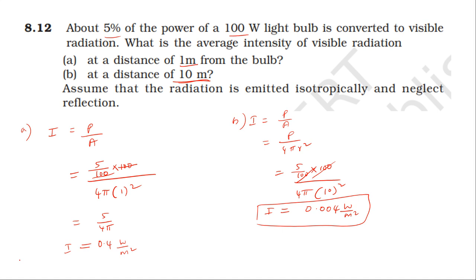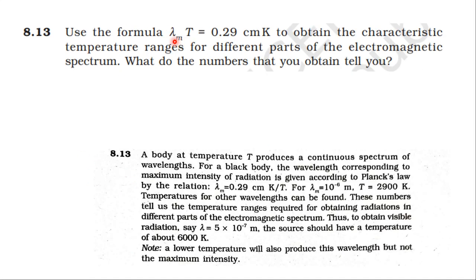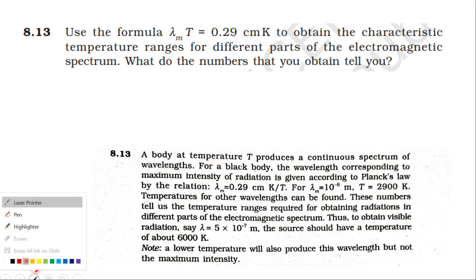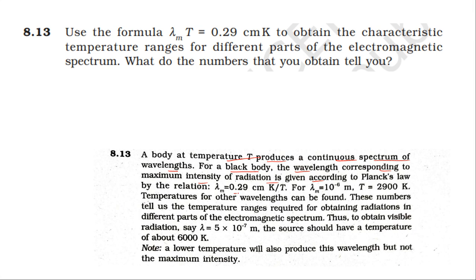Using the formula: wavelength corresponding to maximum intensity multiplied by temperature equals 0.29 centimeter-Kelvin (Wien's displacement law). For a black body, the wavelength corresponding to maximum intensity radiation is given by λ_max = 0.29 cm·K / T. Substituting the relation: λ_max × T = 0.29 × 10^−2 Kelvin.